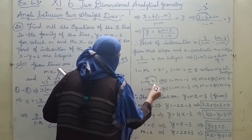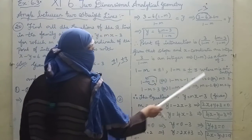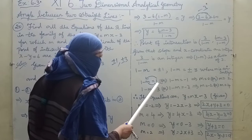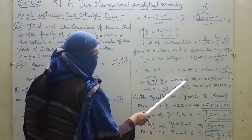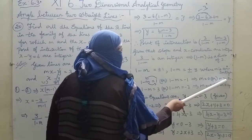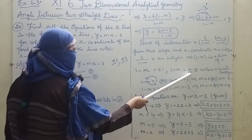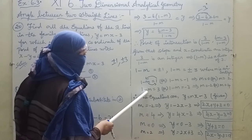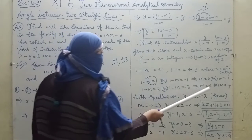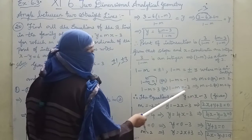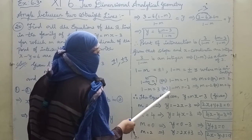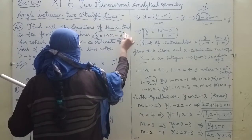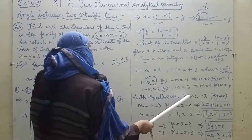From 1 - m = 1, we get m = 0. From 1 - m = -1, we get m = 2. From 1 - m = 3, we get m = -2. From 1 - m = -3, we get m = 4. These are the four values of m.